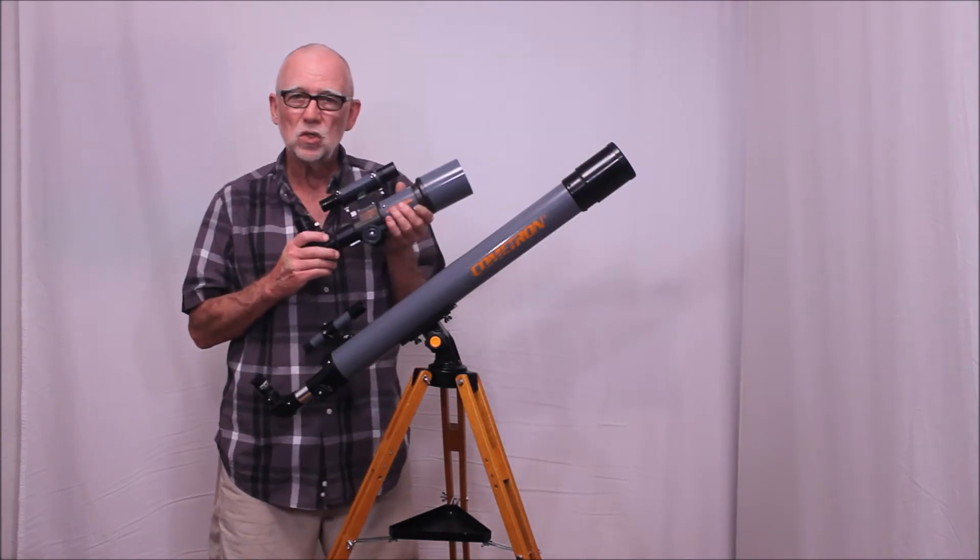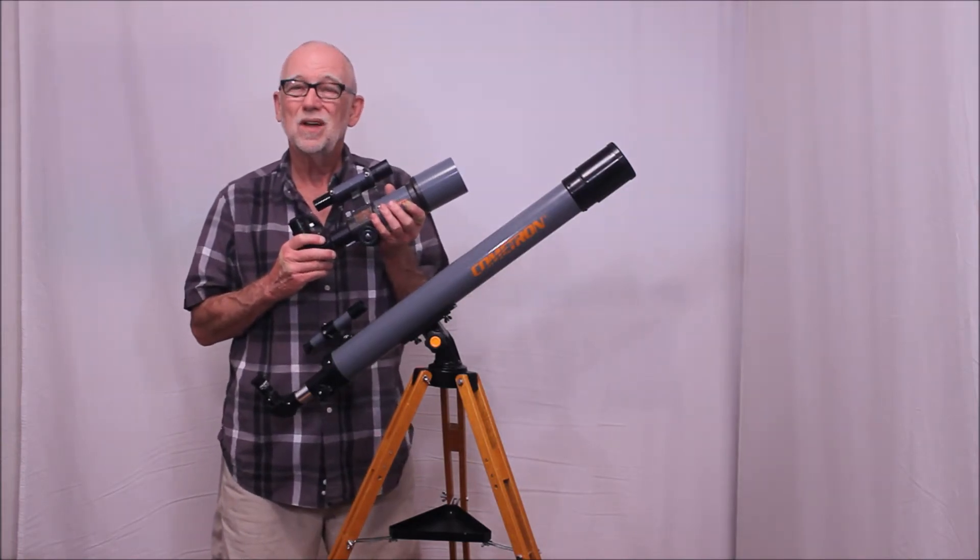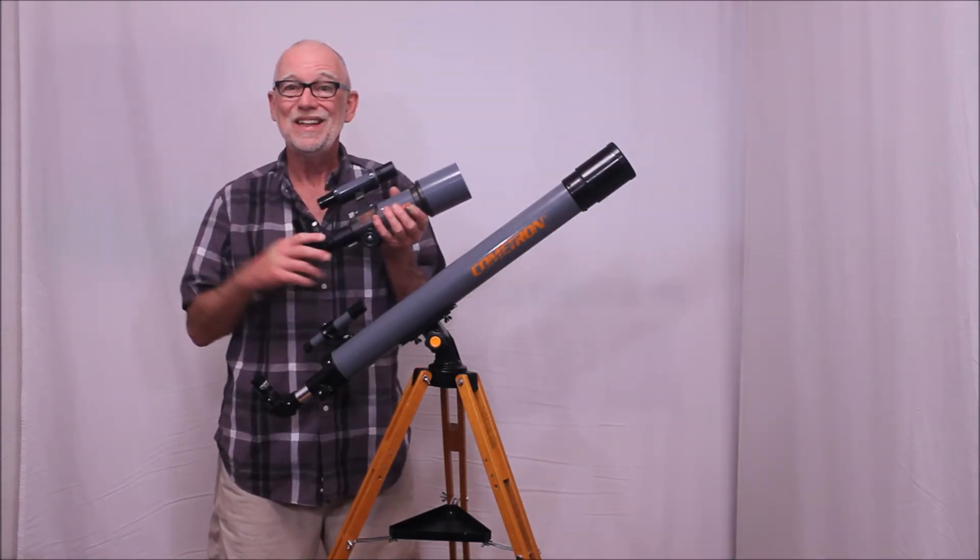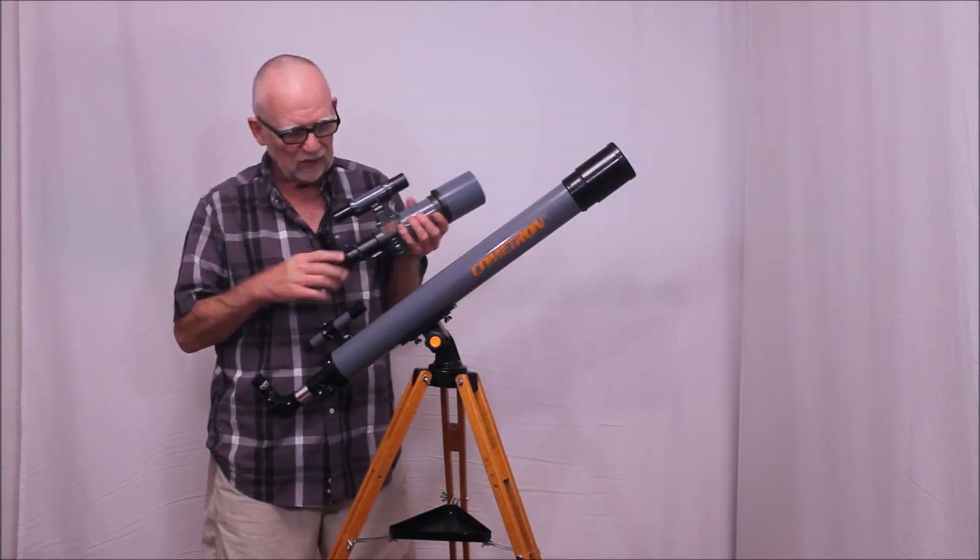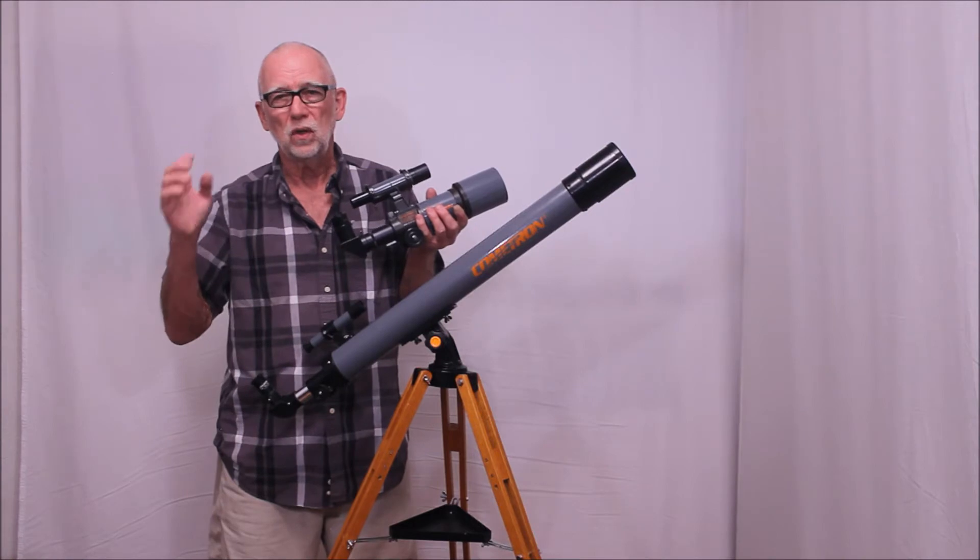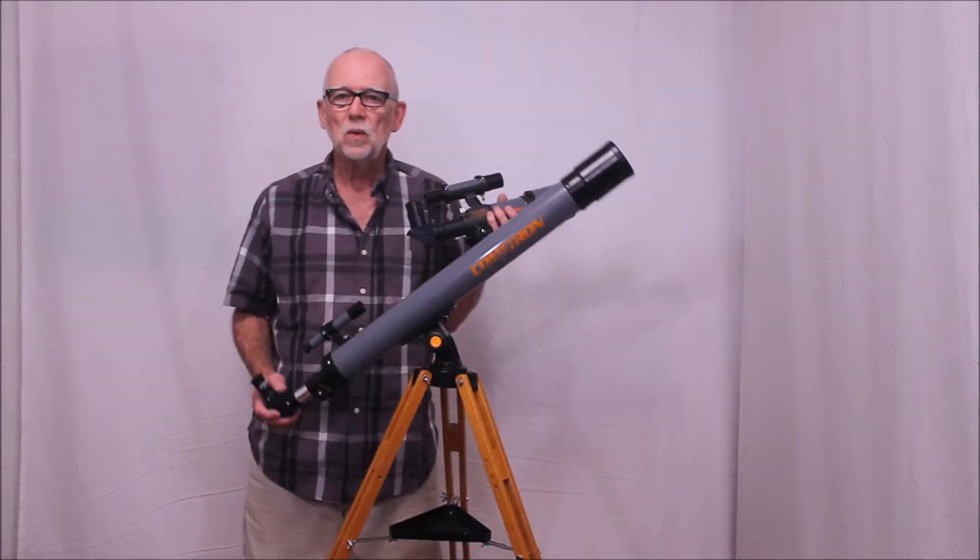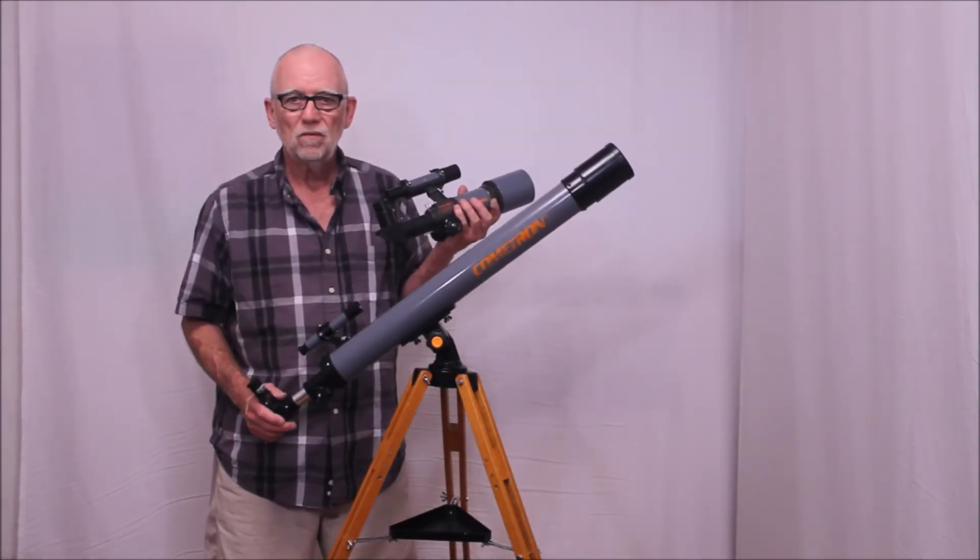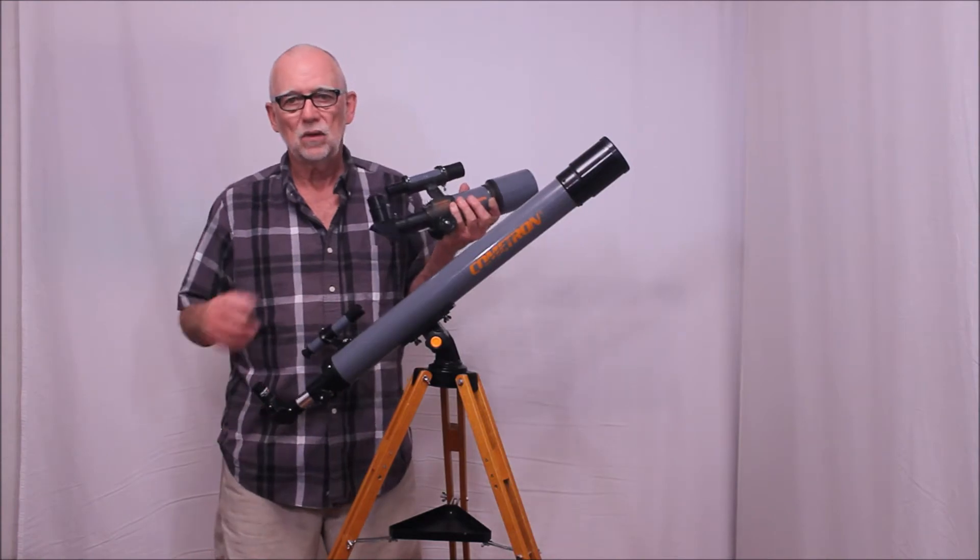Also, do not confuse this with the Celestron Cometron CO60E with an E on the end. That comes on a wonderful Polaris mount. Beautiful equatorial mount. This one has the simple, very basic Altaz mount, as you can see.